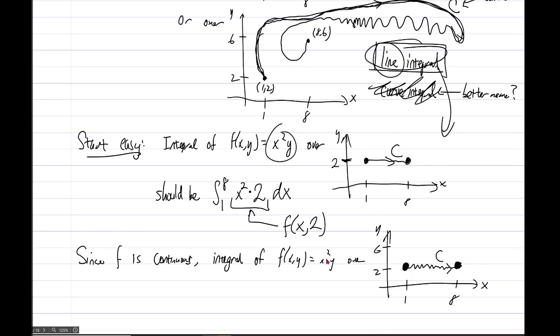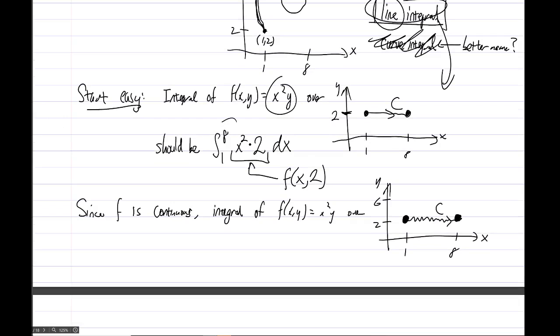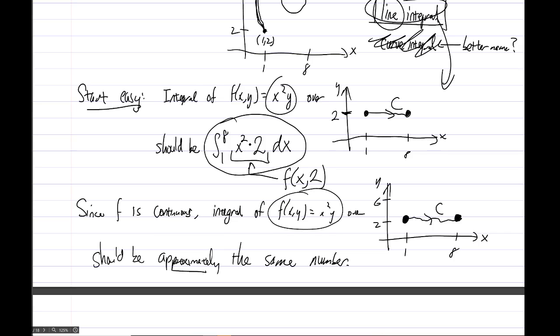So if we travel along here, the integral, and by the way, this integral you can just compute. Integral from 1 to 8, 2x² dx, give that to your Calc 1 friend. But the point is, the integral of this same function over this very similar shape, I mean it just rides in the same places, right? So this should be approximately the same number.